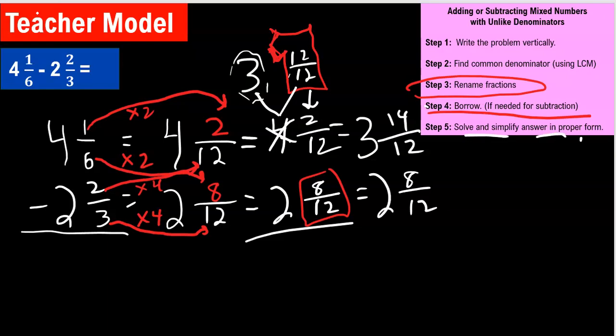Now that we borrow, we can solve and simplify. 14 twelfths minus eight twelfths. Eight, nine, ten, eleven, twelve, thirteen, fourteen. That's six twelfths. See, 14 minus eight is six and we keep the twelve the same. Now we can do three minus two, which is one. Almost done.